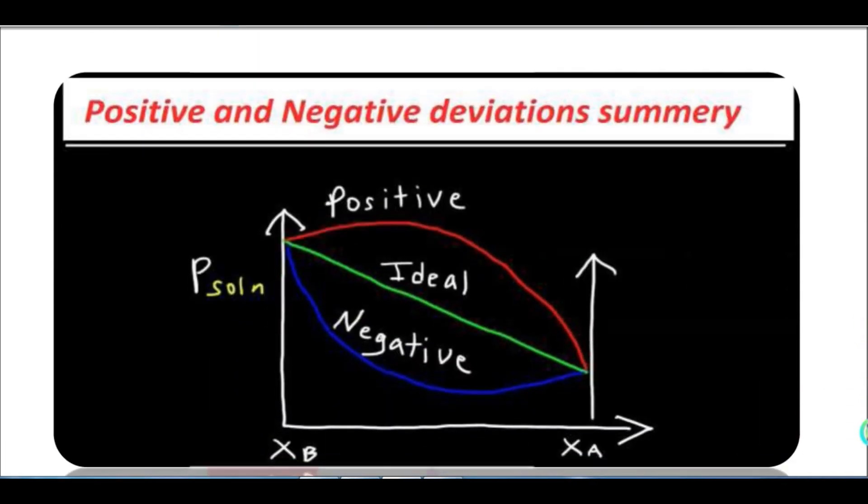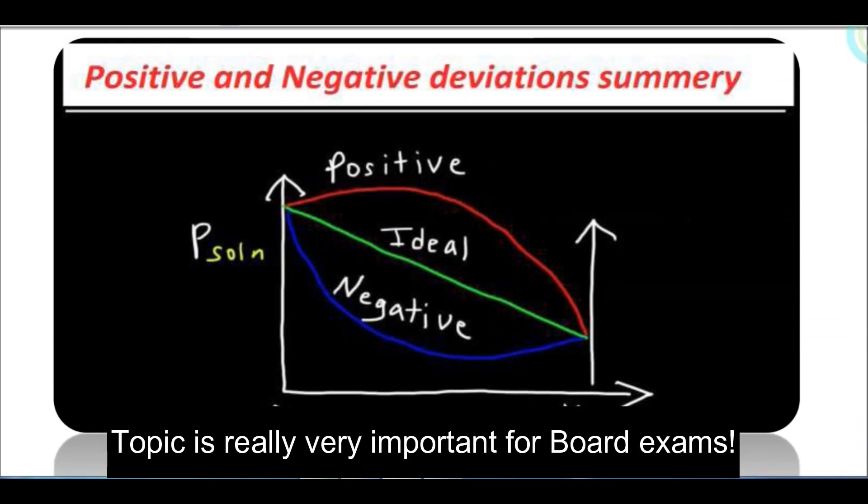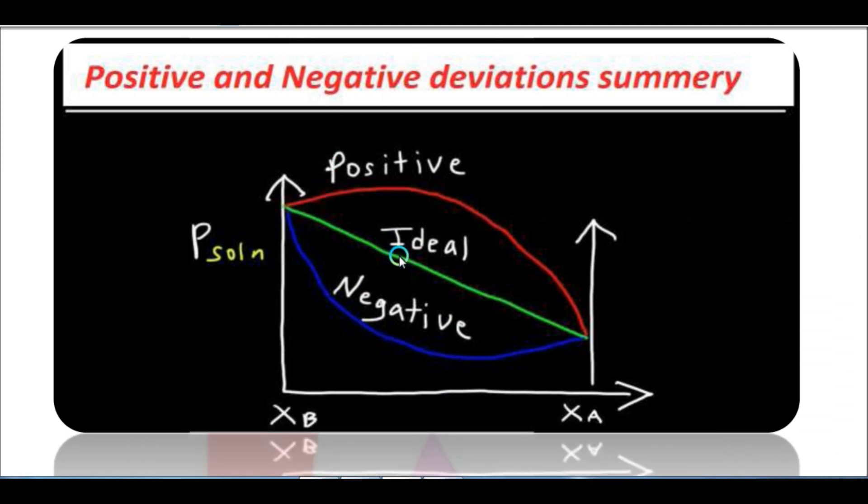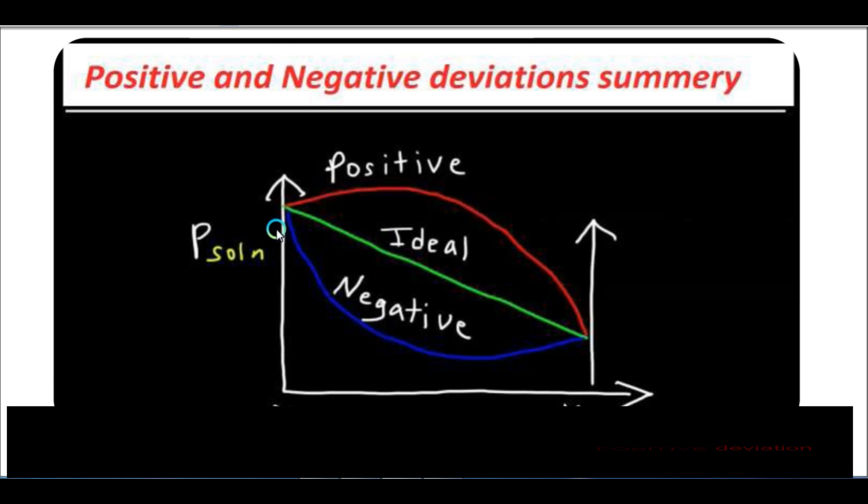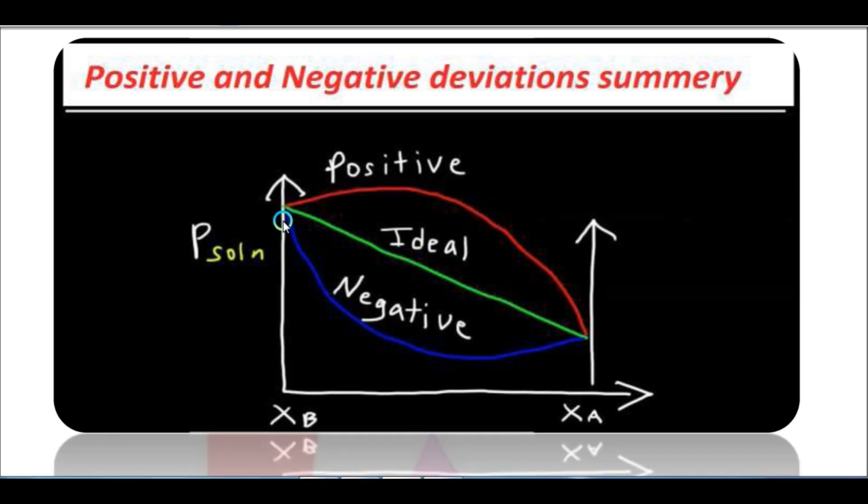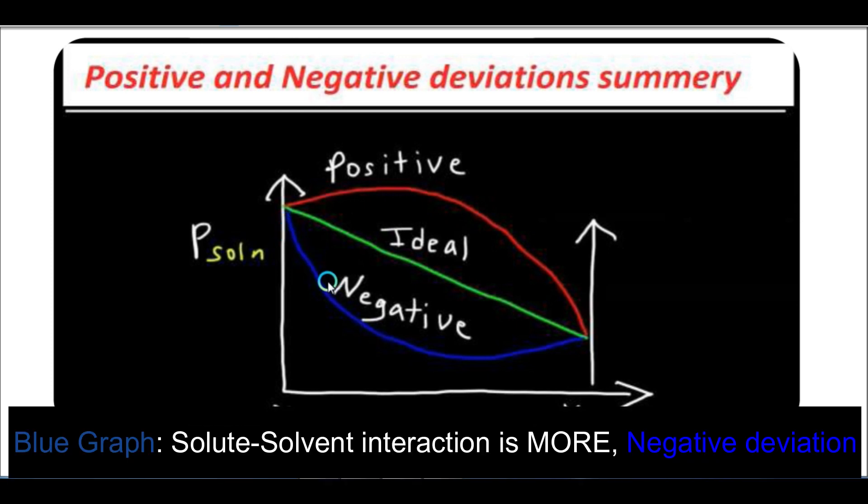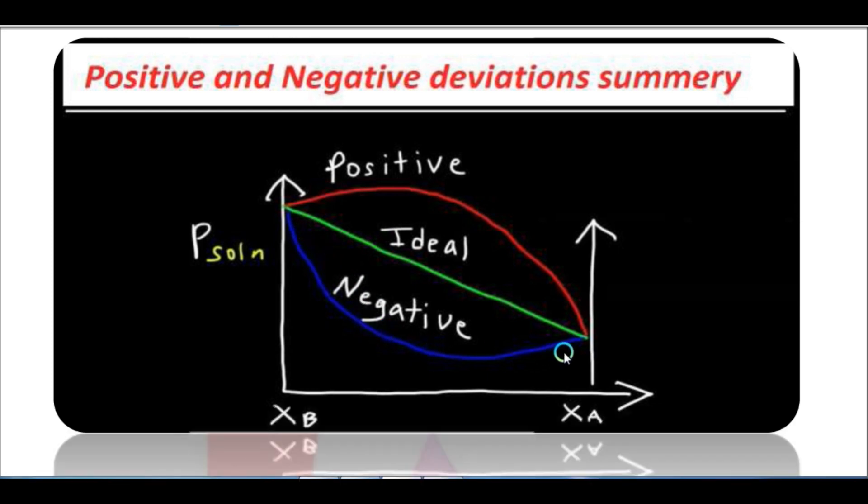Here's the overall summary. The green line represents the ideal solution where there's no special interaction. When you have weak solute-solvent interaction compared to the original interactions, you get positive deviation shown by the upward red graph - examples are ethanol-acetone where hydrogen bonding breaks. When you have strong solute-solvent interaction like acetone-chloroform where new hydrogen bonding forms, you get negative deviation shown by the downward graph. I hope you understood this. If you liked this video, please like and subscribe. Thank you.